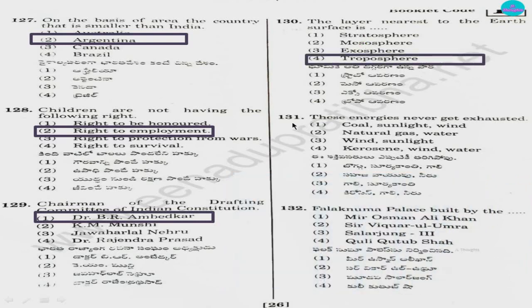Question 131. The energies that never get exhausted: 1) coal, sunlight, wind; 2) natural gas, water; 3) wind or sunlight; 4) kerosene, wind and water. Option 3, wind and sunlight.